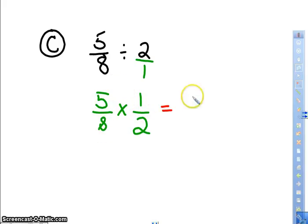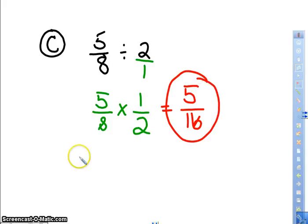So I have 5 times 1, which is 5. 8 times 2, which is 16. That can't be reduced. And there's my answer. So rule for division: first fraction stays the same, change division to multiplication, flip the second number.